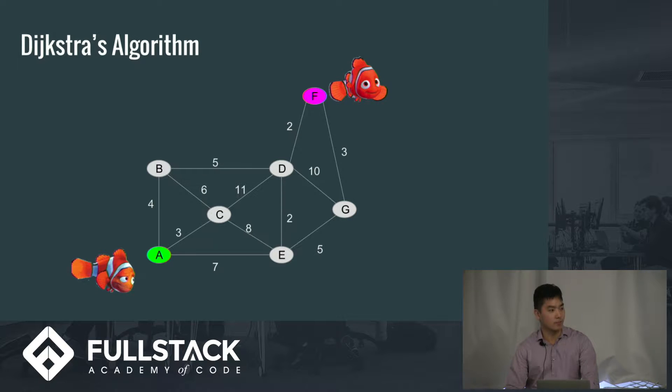So Dijkstra's algorithm, when you first start out, you have to input values for each vertex. So each vertex is going to be infinity, because we don't know how to get there yet. And for A, it's going to be zero, because the distance from A to A is zero.